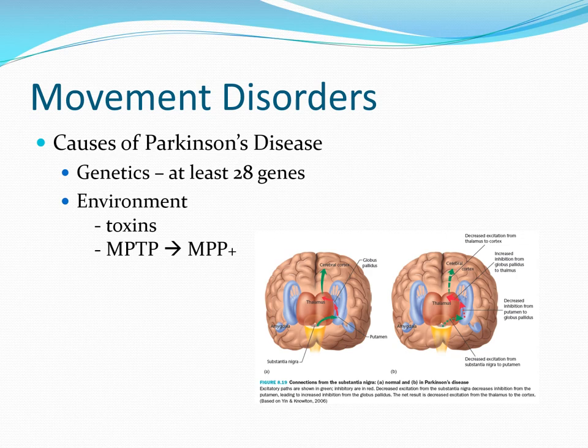There's also an environmental component. Exposure to pesticides, herbicides, fungicides, and similar toxins increases Parkinson's risk. One reason researchers looked toward environmental causes was an incident in 1982 in Northern California where young people took synthetic heroin containing MPTP, which becomes MPP+ in the body — a chemical that destroys neurons in the substantia nigra.